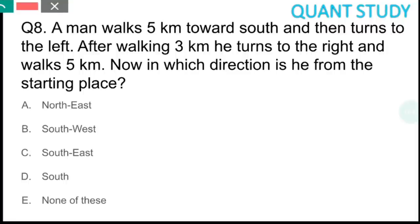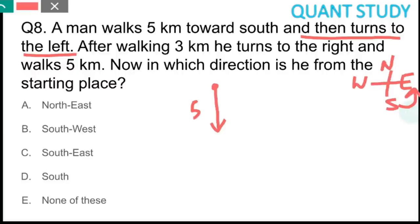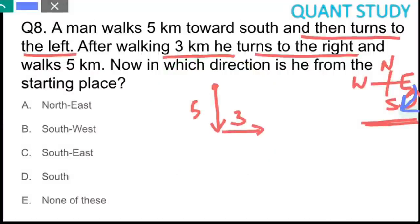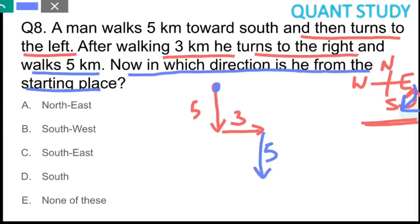Question 8: A man walks 5 km towards south, then turns left — left from south means east — and walks 3 km east. Then he turns right — right from east is south — and walks 5 km south. The question asks in which direction he is from the starting point. His current position is to the south and east of the starting point. So the answer is option C, south-east.